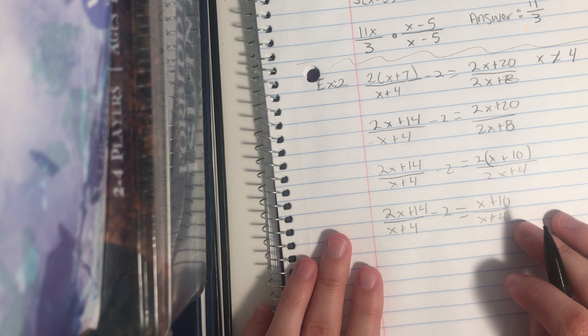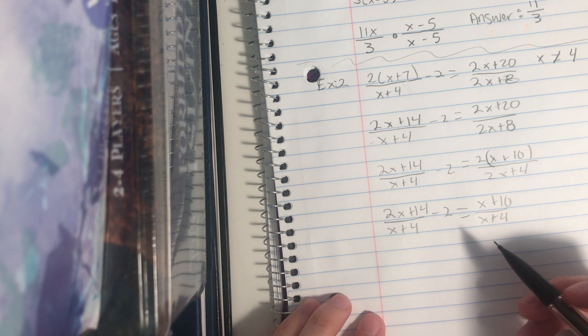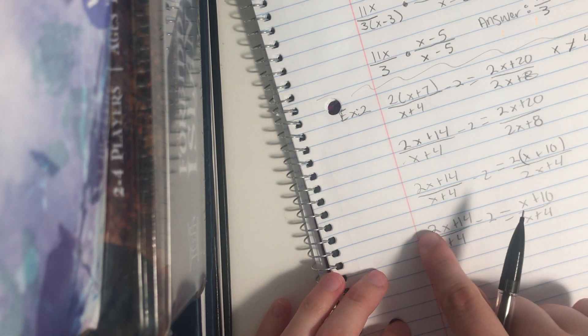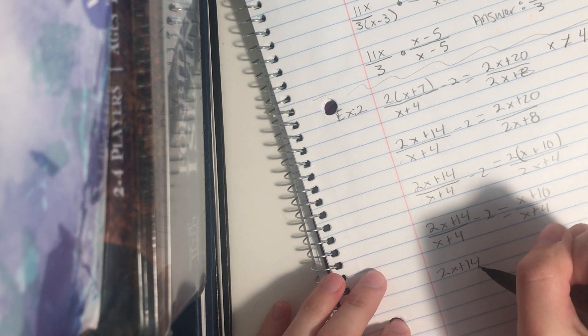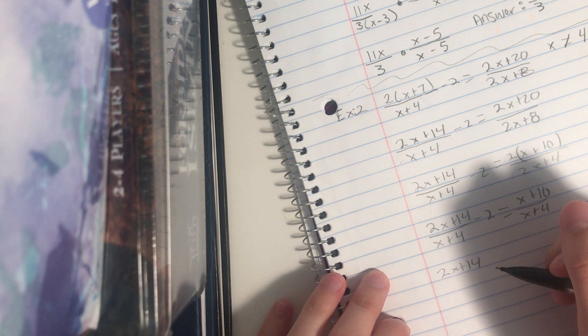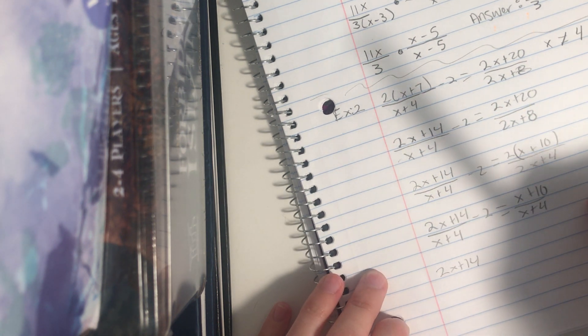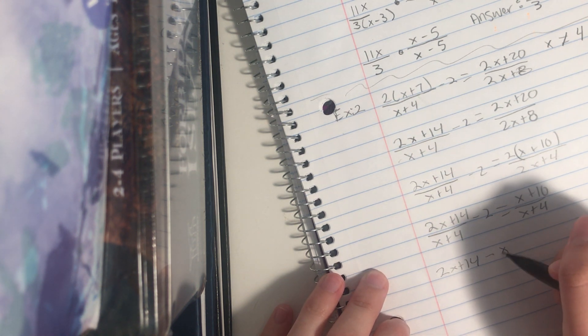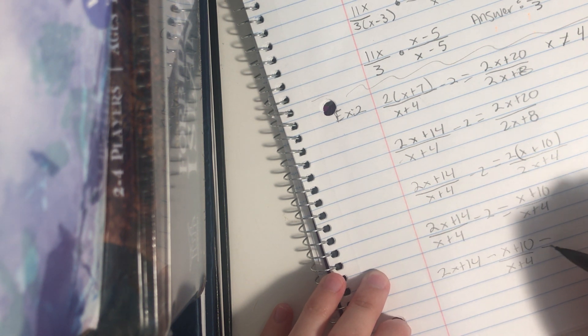Then I want to switch and write the numerators over the denominators. Since these are the same, we just write this on top of this, so we have 2x plus 14. Also, I want to rewrite the expression, throwing the 2 on the outside first, technically.